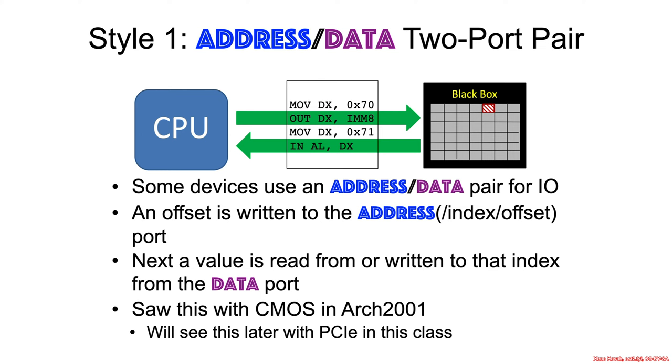In the case of CMOS we saw how the first addresses were just used for the real-time clock bytes, and then addresses after that were the actual non-volatile storage of CMOS. But this particular address/data style is going to be the one that we're going to see repeatedly throughout the rest of the class in the context of port I/O access to PCIe devices.